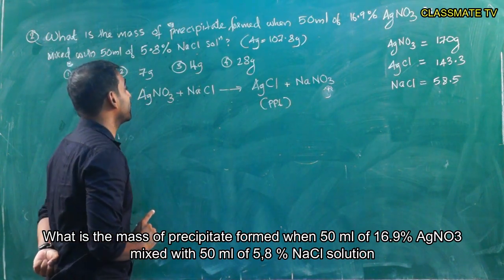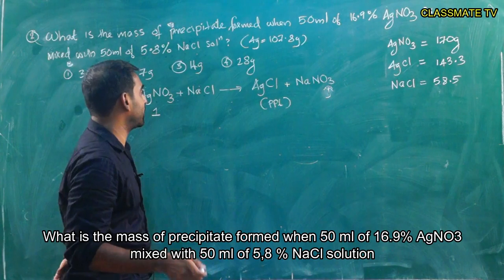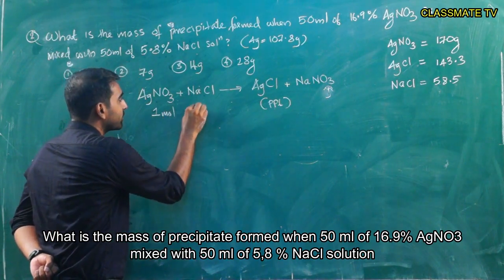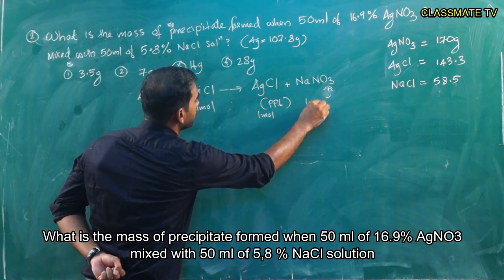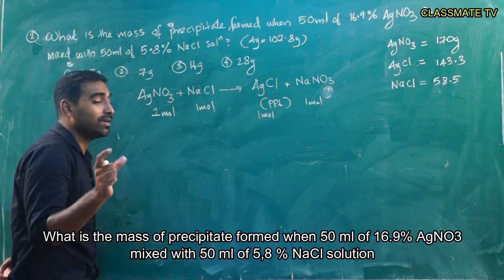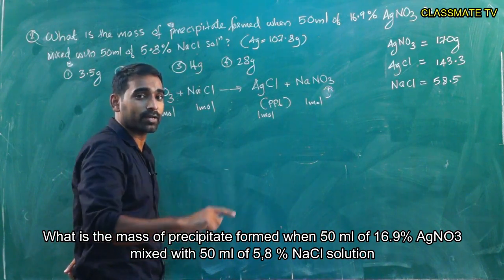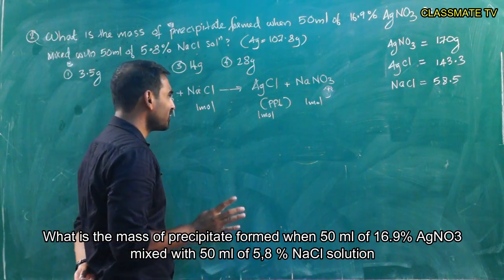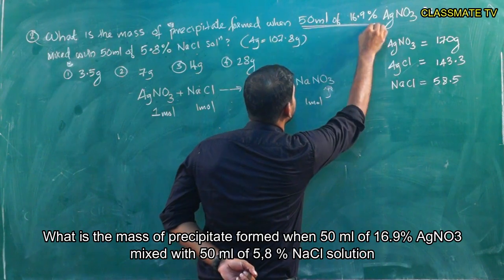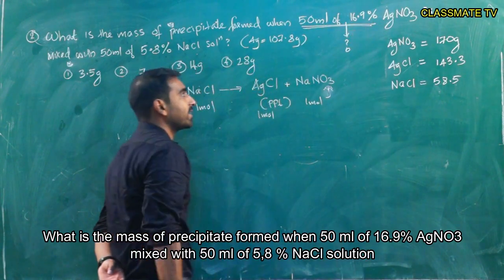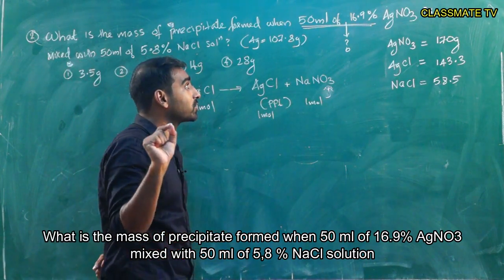This is a stoichiometry equation. 1 mole of silver nitrate reacts with 1 mole of NaCl to form 1 mole of AgCl and 1 mole of NaNO₃. For this double displacement reaction, all species are in a 1:1:1:1 mole ratio.